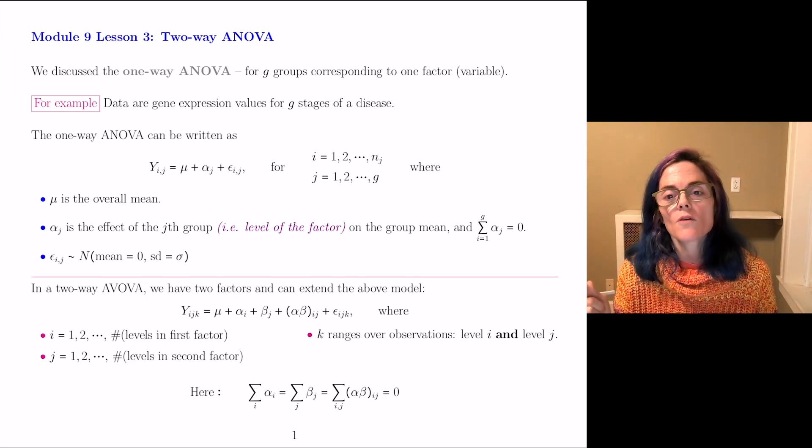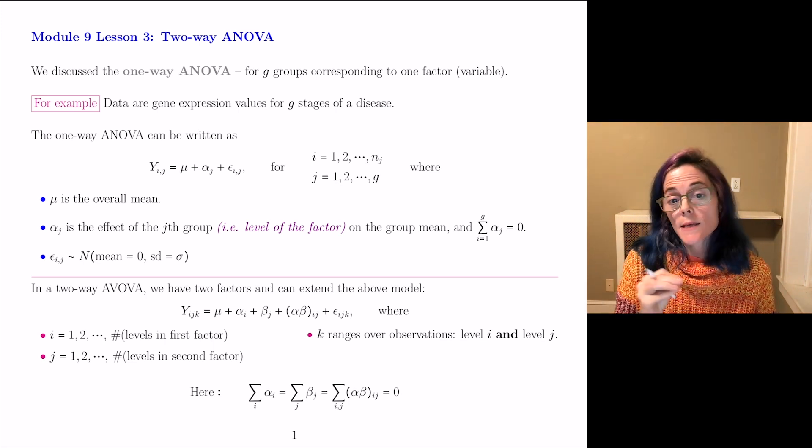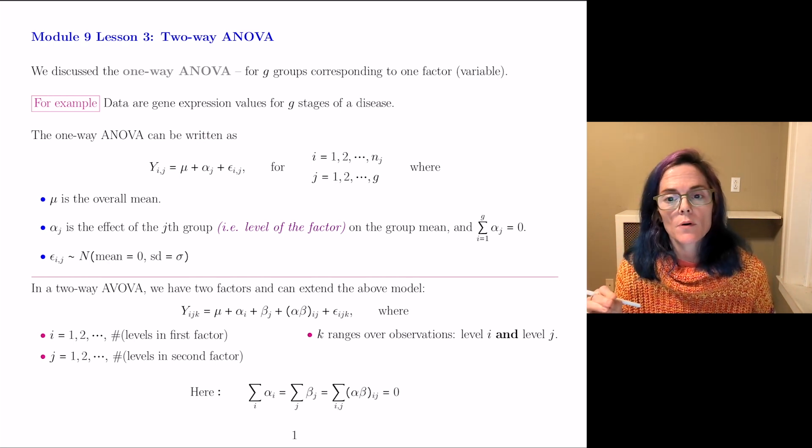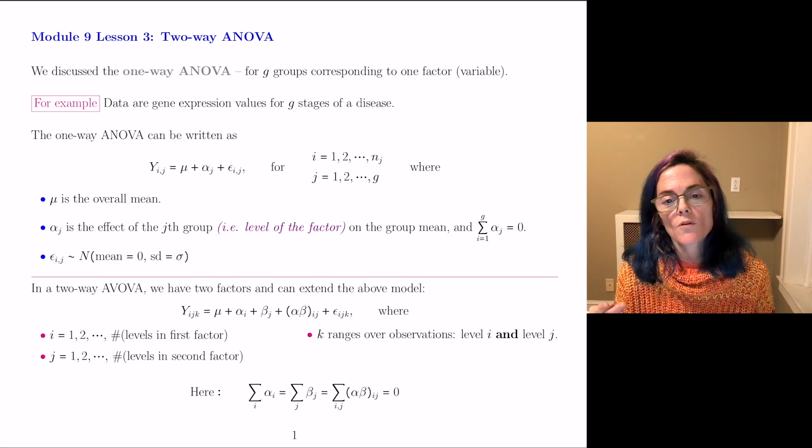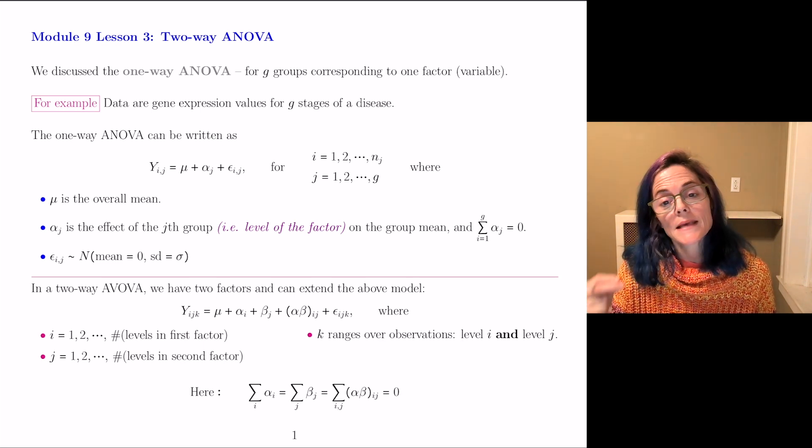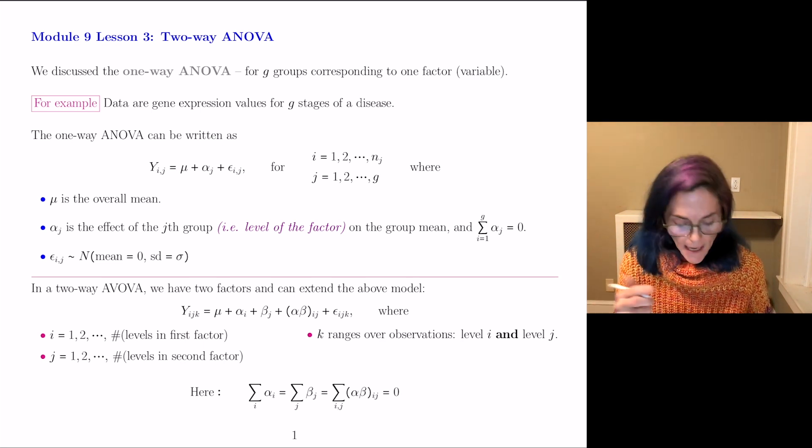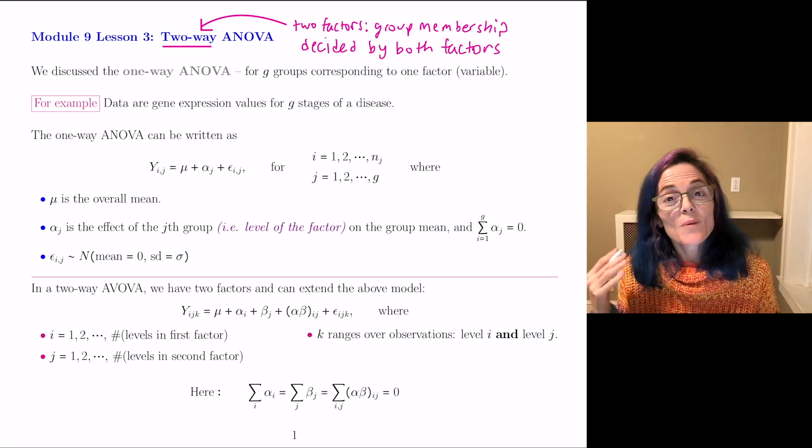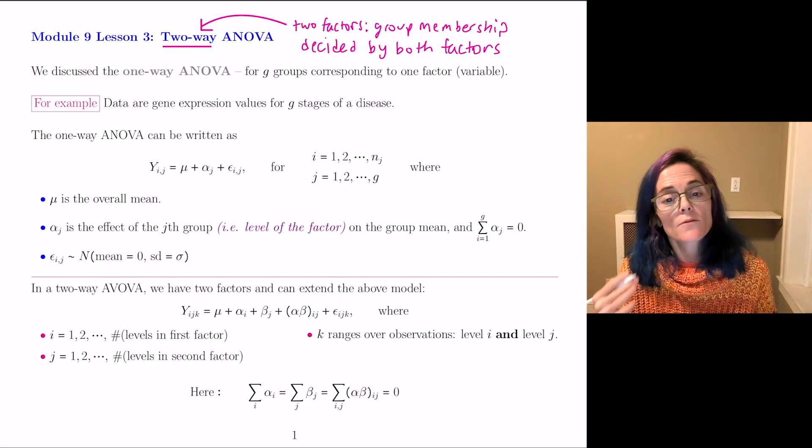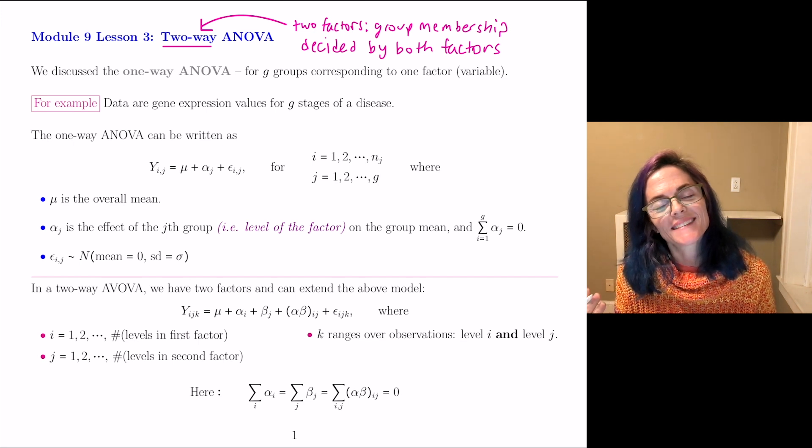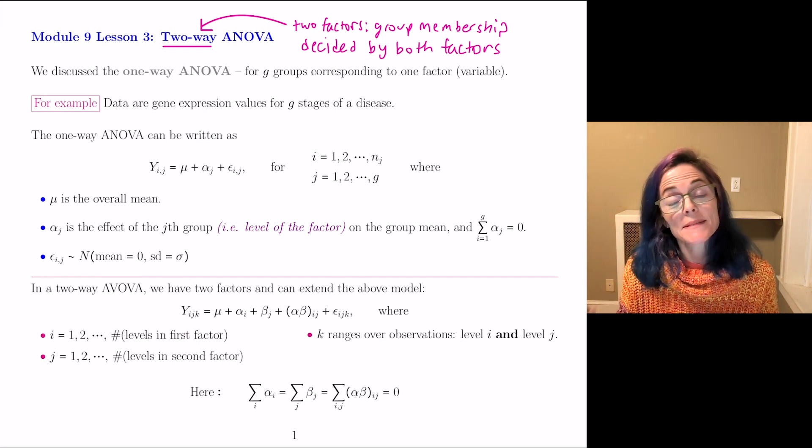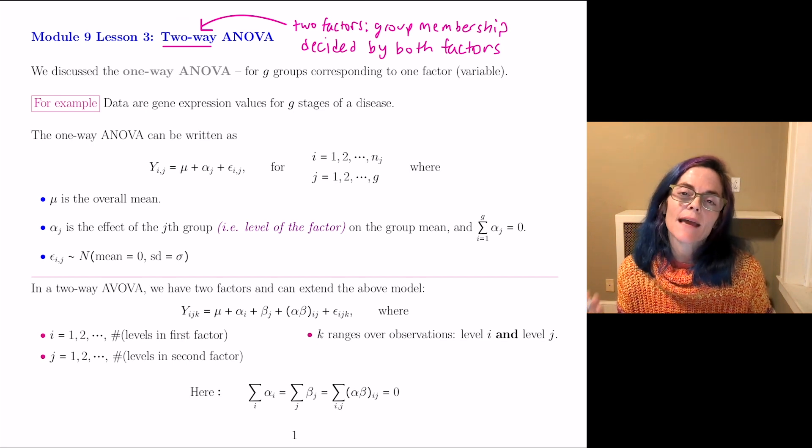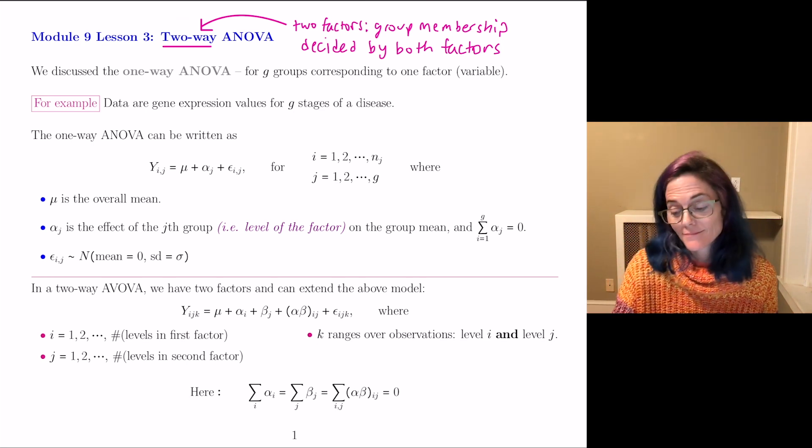So in the one-way ANOVA, we had data separated into groups based on one factor variable. We have two factors in the two-way ANOVA. And so group membership is decided by both factors. Maybe I should write this. We want to study the effects of group means on each of the two factors. We have just one objective of this lesson, which is to perform a two-way ANOVA in R and interpret the results.